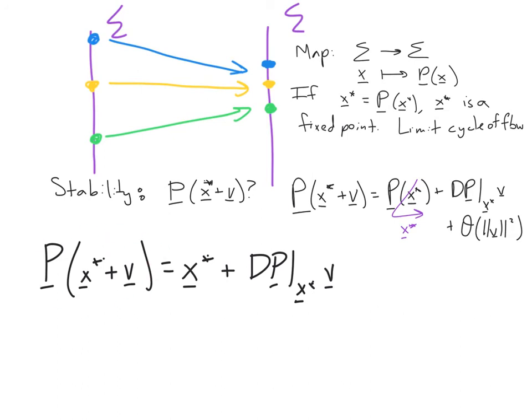So in summary, the Poincaré map of our fixed point plus this small perturbation is equal to the location of the original fixed point plus this object over here. And if this object is closer to the fixed point than the original V was, then it's a stable fixed point.